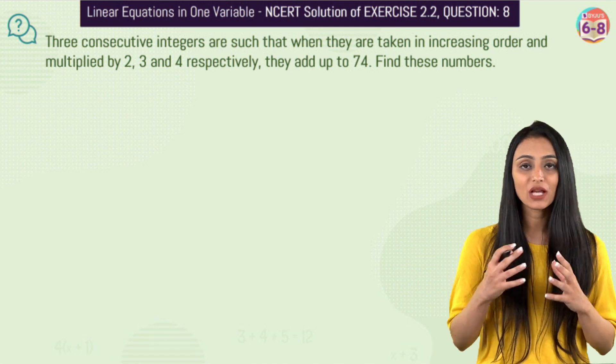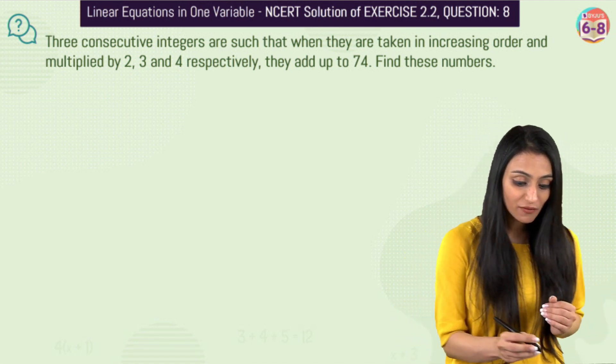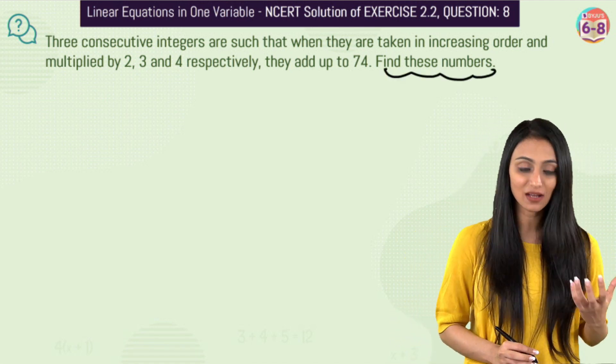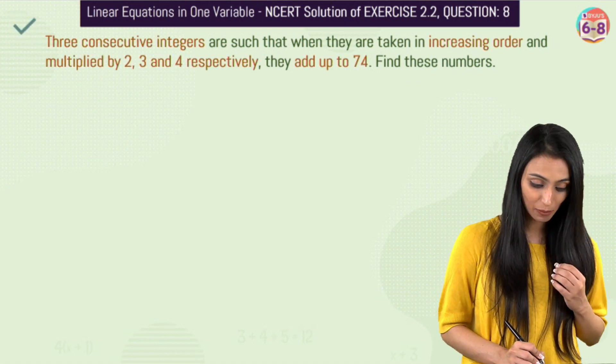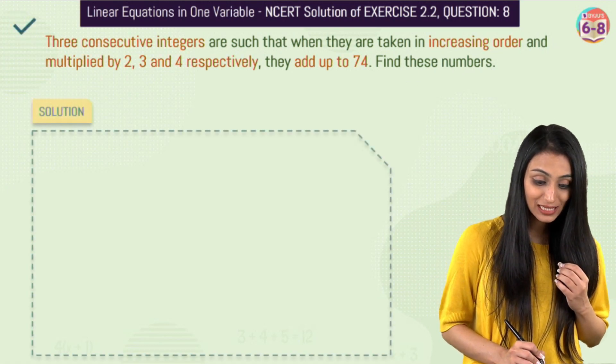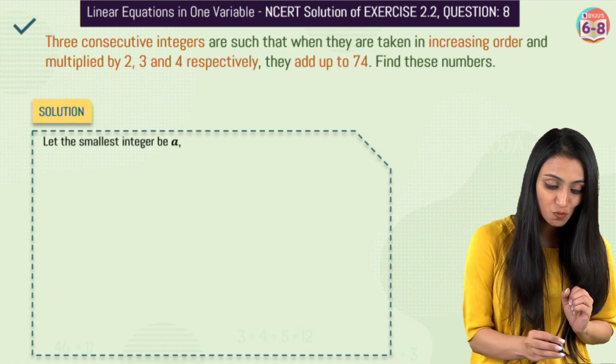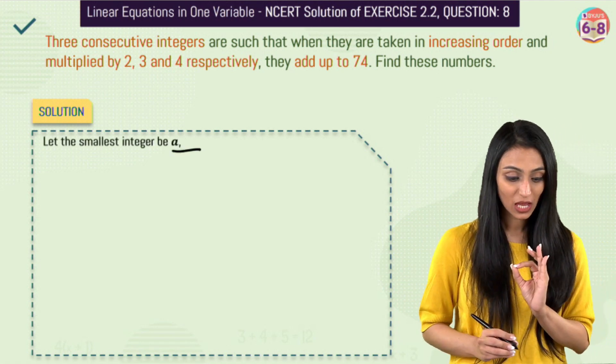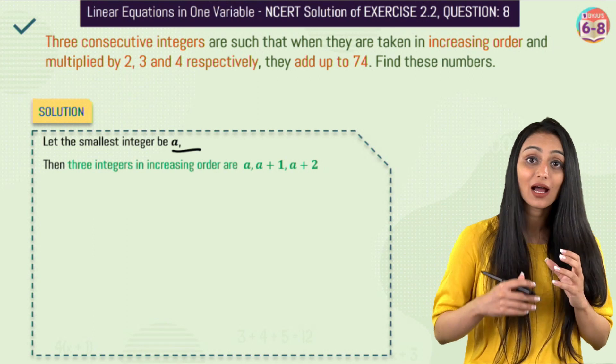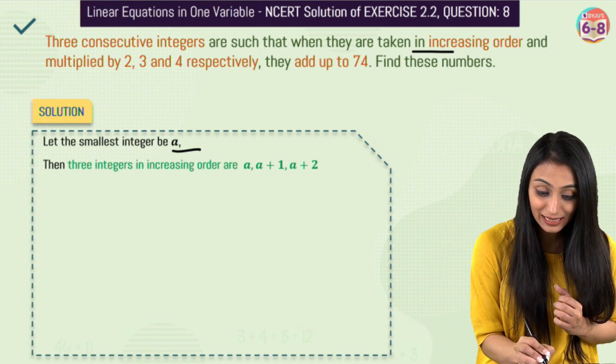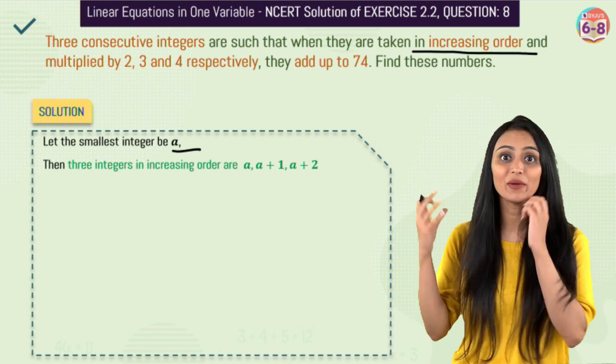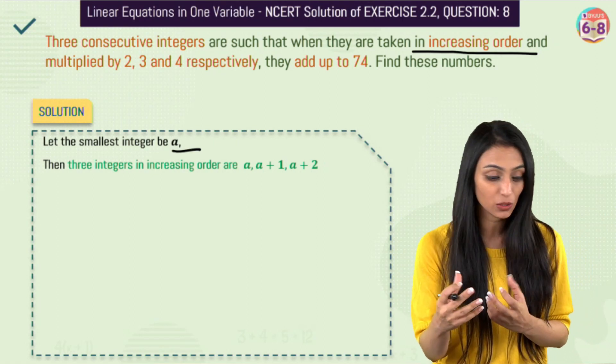First of all, when we come across word problems, whatever we have to find, let's first assign a variable to it. We need to find three numbers, right? So what we will do is these numbers are consecutive. So let's suppose that the smallest integer over here is a. Since they are consecutive, that means the other three integers—it says that they are in increasing order. So every information is given in the question. We need to look for keywords.